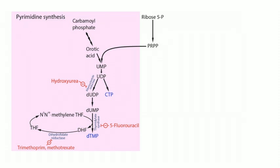Pyrimidine synthesis starts with carbamoyl phosphate, requiring glutamine, CO2, and ATP. The important enzyme that catalyzes this is carbamoyl phosphate synthetase 2, or CPS2 — it is the rate-limiting step of pyrimidine synthesis. For Step 1, focus on rate-limiting enzymes of metabolic pathways, as well as enzymes deficient in disease states. CPS2 is the rate-limiting enzyme in pyrimidine synthesis.